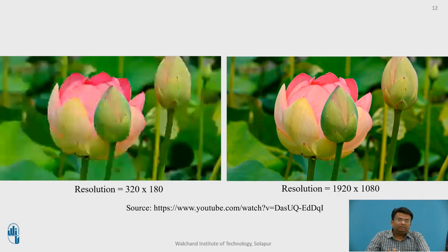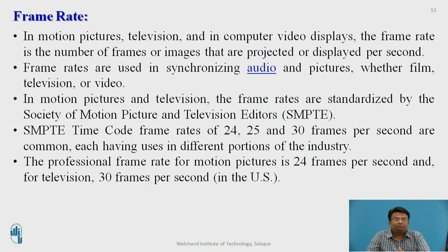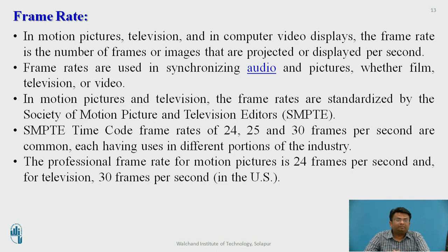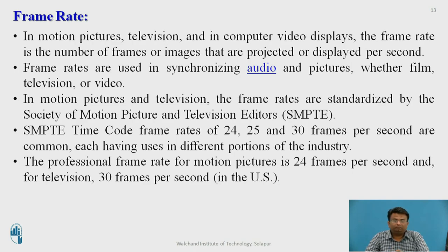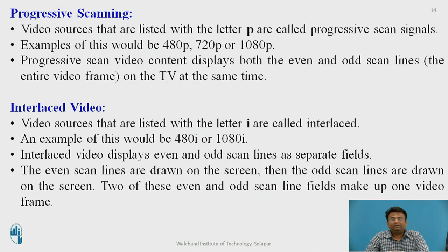The next factor is frame rate. In motion pictures and television, motion is created by frames — the number of frames played per second. The frame rate defines the number of frames per second. Generally, frame rates of 24, 25, or 30 frames per second are common, as defined by the SMPTE (Society of Motion Picture and Television Editors). The professional frame rate for motion pictures is 24 fps and for television it is 30 fps.